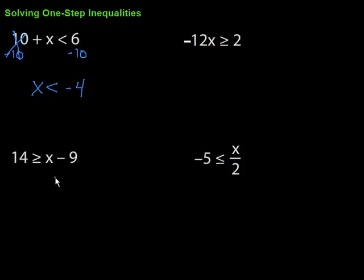Let's take a look at this next one down here. For this one, what we're going to want to do is, again, focus in, find that variable, and then get it by itself. So here's the x. We're going to get rid of whatever's hanging out with it. We've got a minus 9. What's the opposite of minus 9? Plus 9.